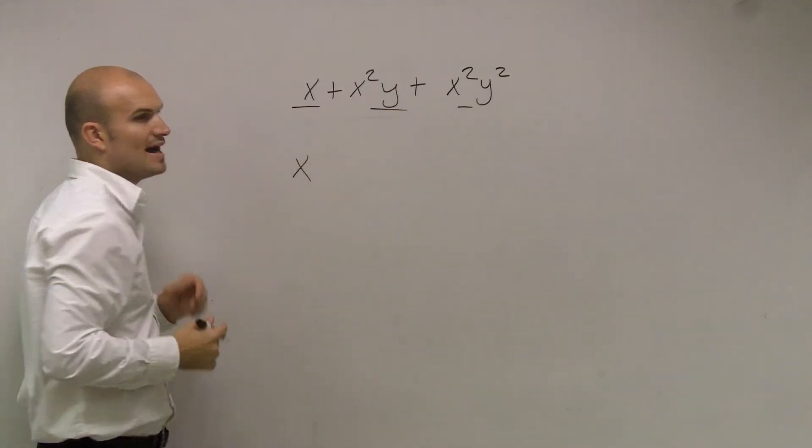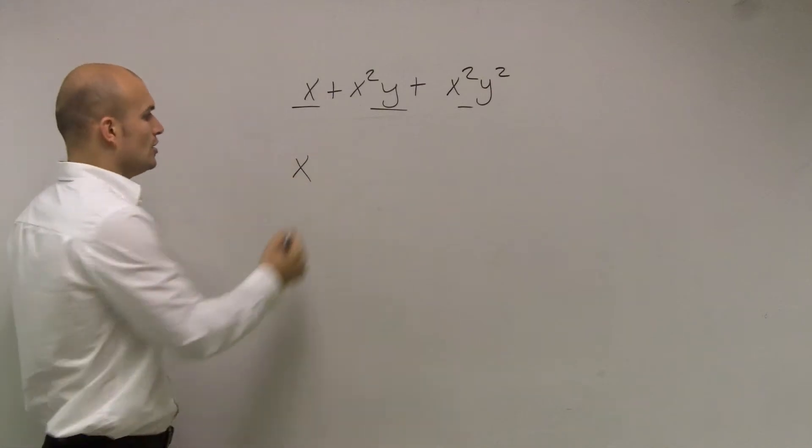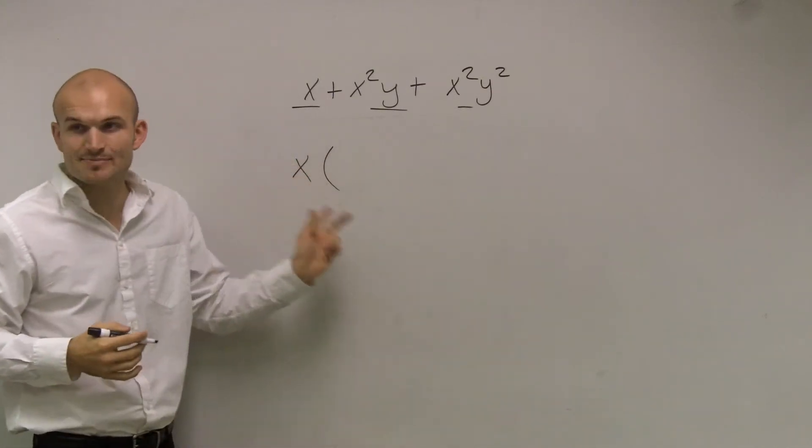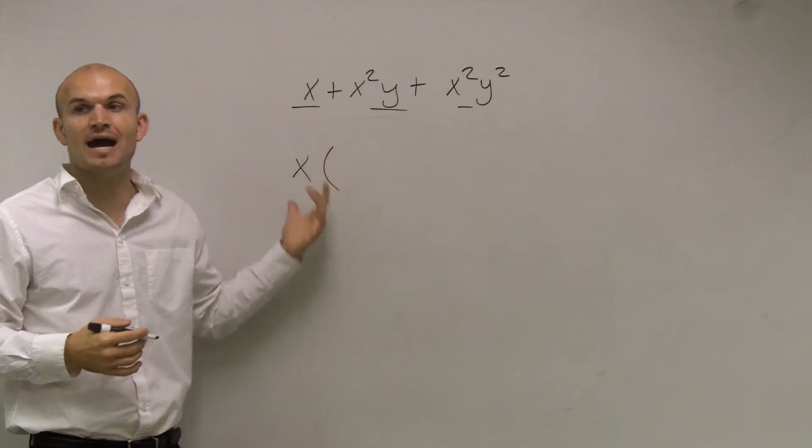So what I'm going to do is when I divide them by x, my result is going to be my other factor because x is my greatest common factor that I divide out.